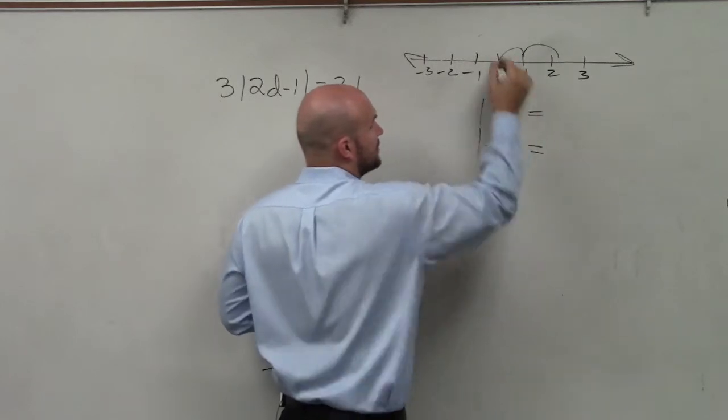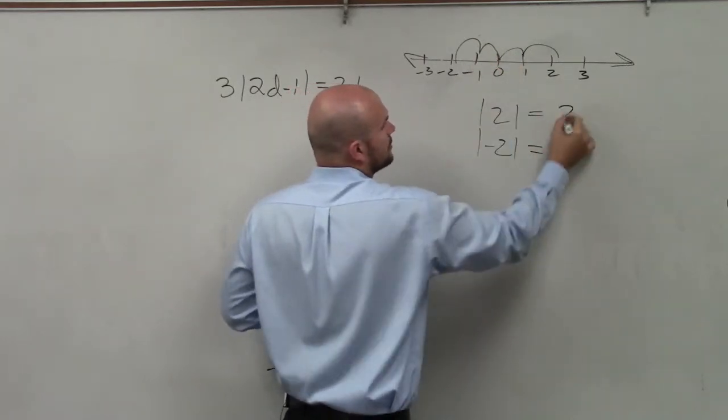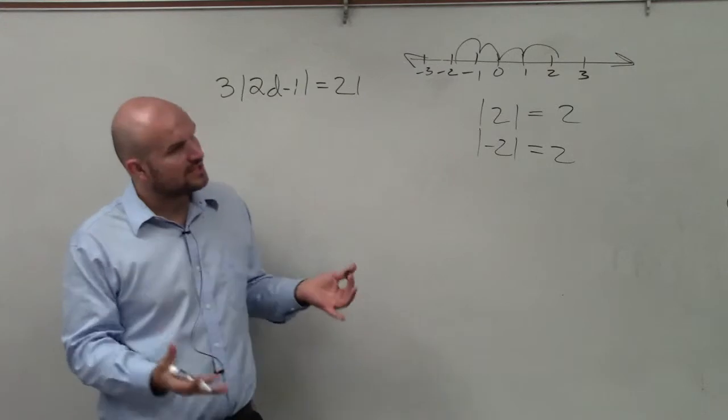Where the absolute value of negative 2 is also 2 units over. So the basic thing that I want you guys to understand is,